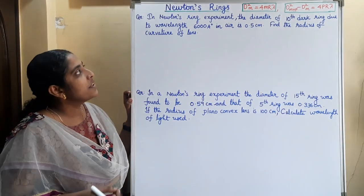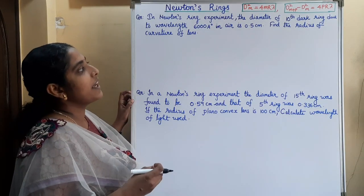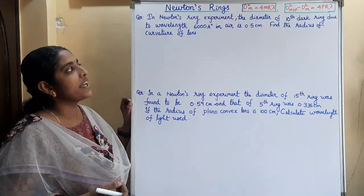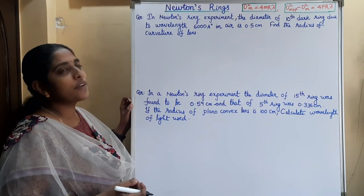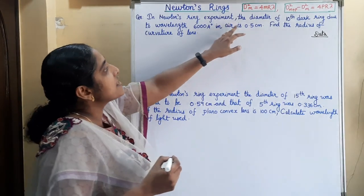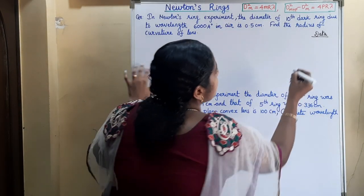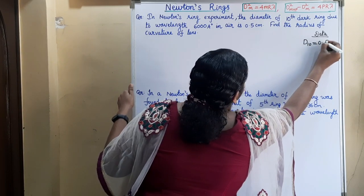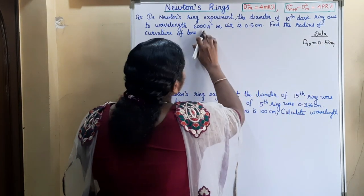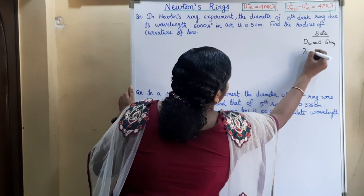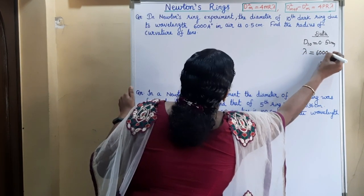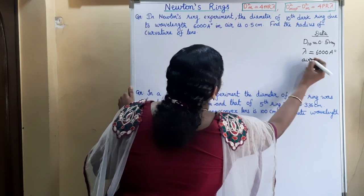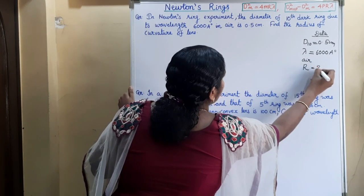Now we can see the first question. In Newton's ring experiment, the diameter of the 10th dark ring due to wavelength 6000 Angstrom in air is 0.5 cm. Find the radius of curvature of the lens. So d₁₀ = 0.5 cm, λ = 6000 Angstrom in air, so the medium refractive index is 1.